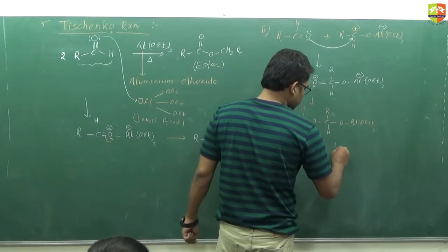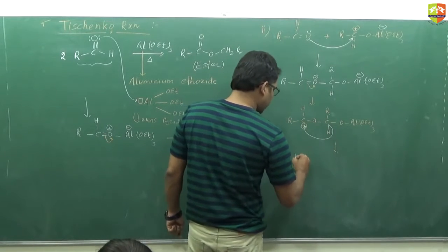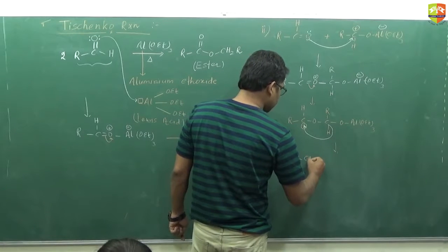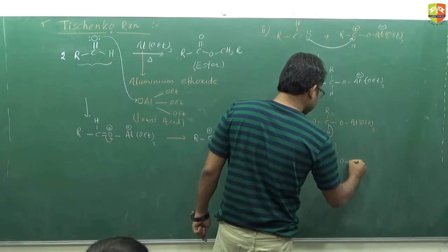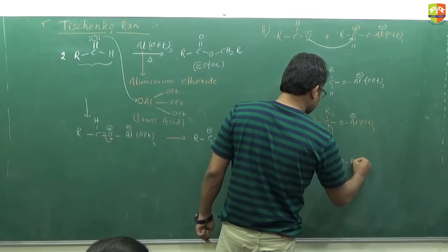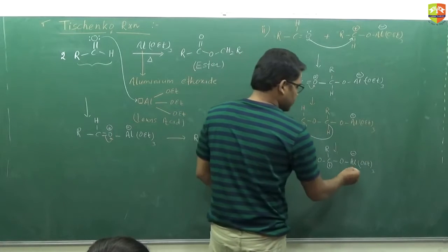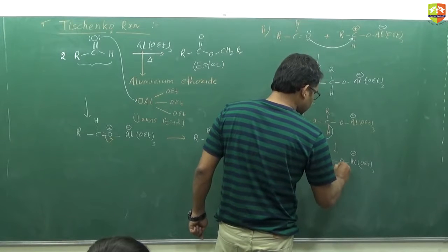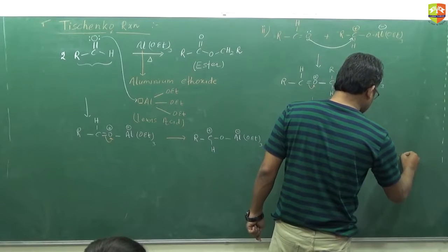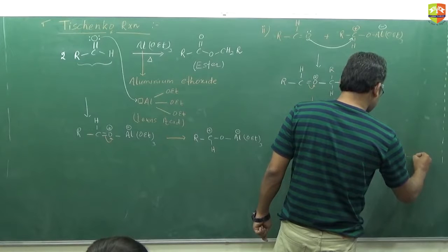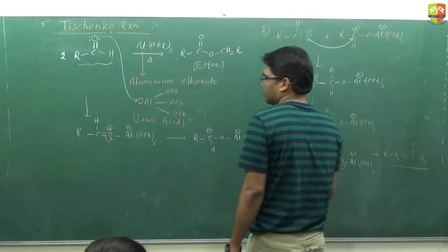Now again this bond pair is taken up by this oxygen, converting the intermediate. Then there is a hydride shift — this hydrogen takes the pair of electrons and rearranges itself onto this carbon, giving RCH₂O·CR=O·Al(OEt). In the last step, the Al(OEt) group leaves as a leaving group, the bond pair shifts, and the final product is RCH₂O·C=O·R, which is an ester.